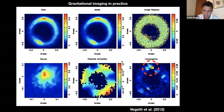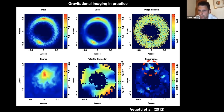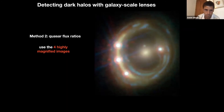That was a demo video. This next panel shows gravitational imaging in practice. On the top left is the data, the central panel is the model, and in the bottom right, where I've circled something, is the inferred mass distribution around the arc. You see a concentrated blob of mass — this was one of the first detections of a completely dark halo in a lensed arc, done in 2012.